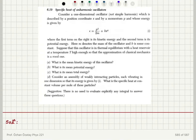Specific heat of anharmonic oscillators. Consider a one-dimensional oscillator, not simple harmonic, which is described by a position coordinate x and momentum p, whose energy is given by p squared over 2m plus bx to the 4, where the first term is kinetic energy and the second term is potential energy. Here m denotes the mass of the oscillator and b is some constant.